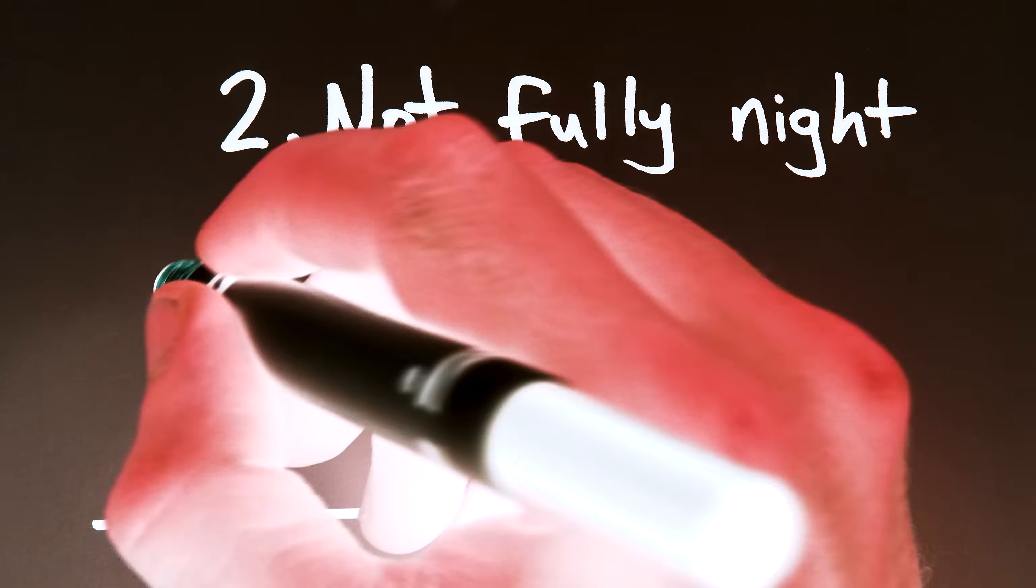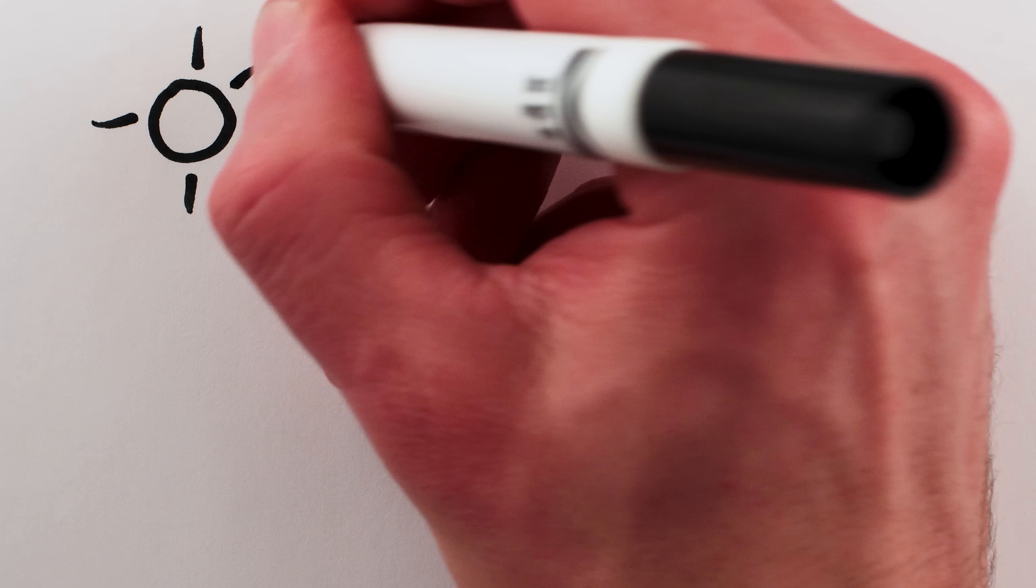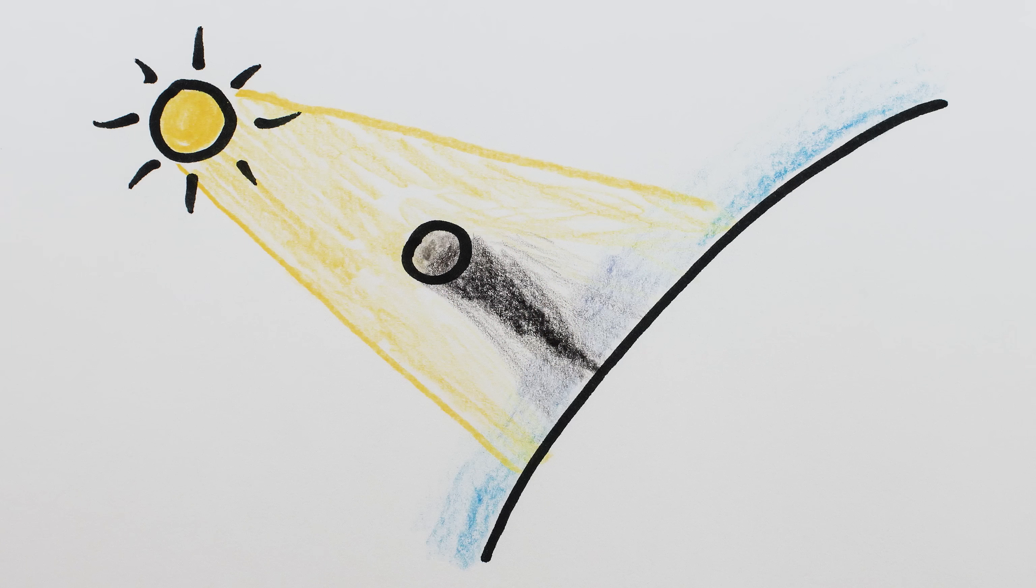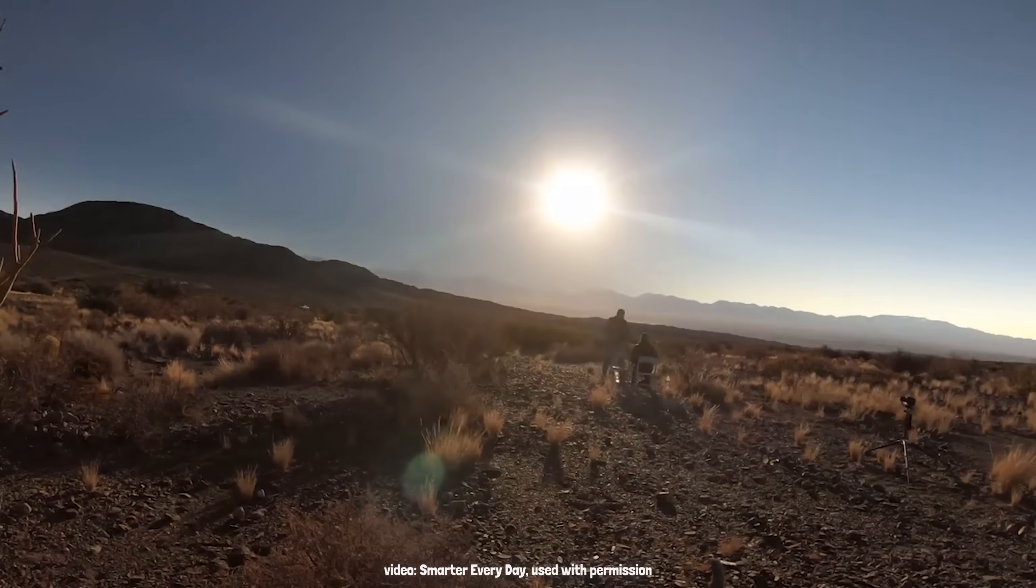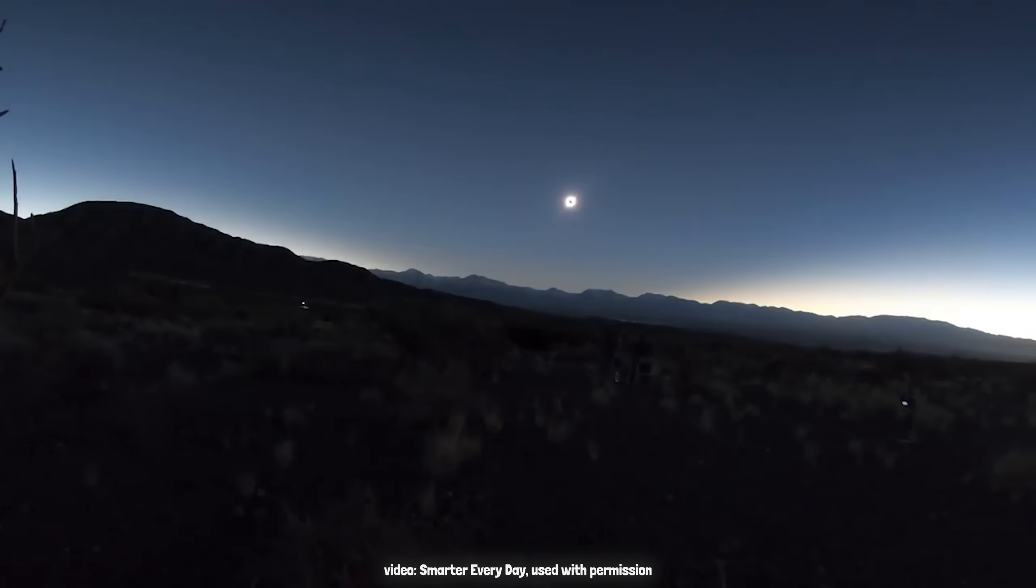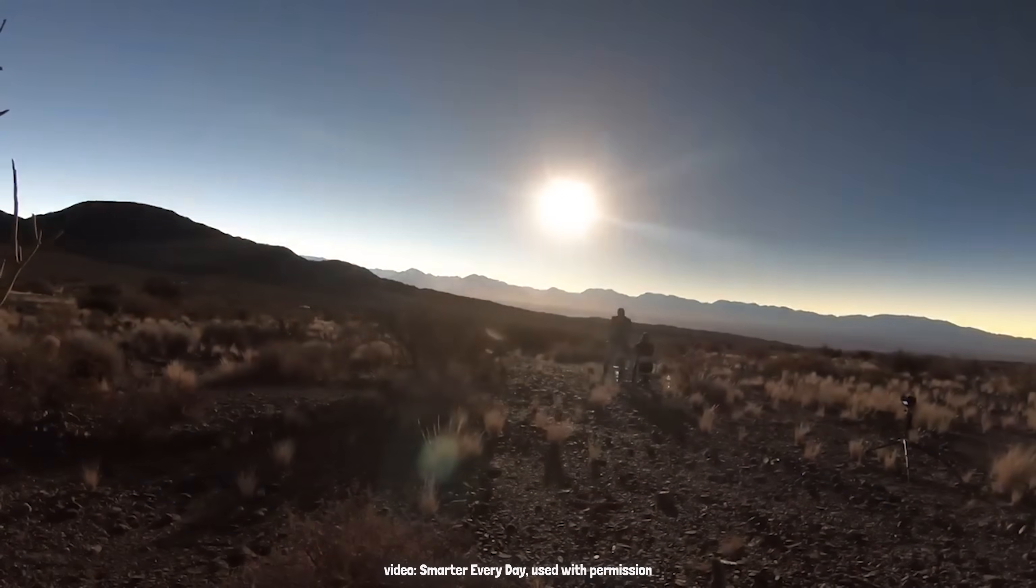Second, our eclipses aren't purely like night either. The shadow of the moon is small enough that there's still sunlight falling on the atmosphere near the horizon, resulting in a deep blue sky and the appearance of a sunrise or sunset 360 degrees around you.